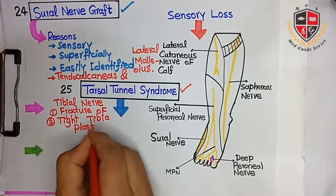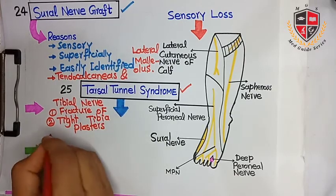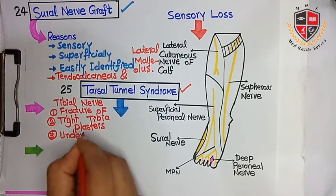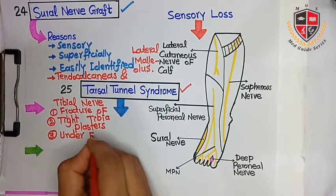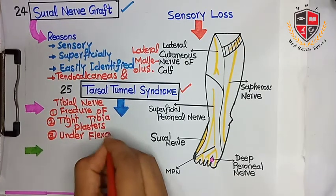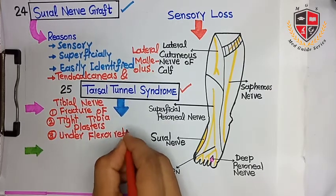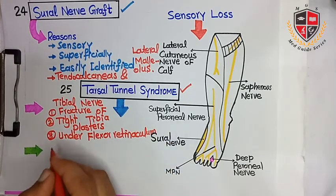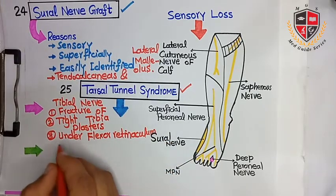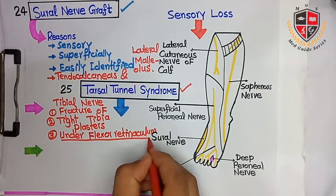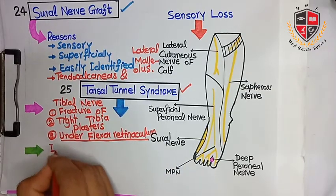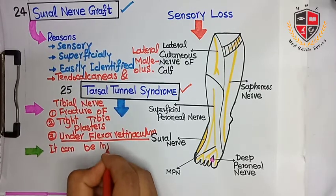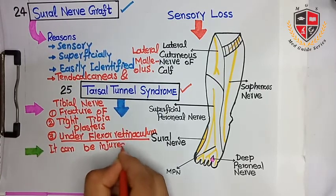The tibial nerve can be injured under the flexor retinaculum. It causes both sensory losses and motor losses.